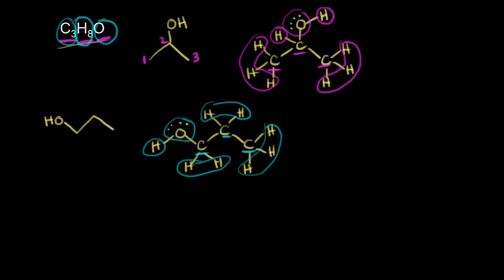Some students might think: we put an OH coming off of carbon one, but what if we put an OH on the other side? Hopefully it's obvious that these two represent the same molecule — there's no difference in how they are connected structurally. So this is not a new structural isomer, just a new way of looking at the same molecule.